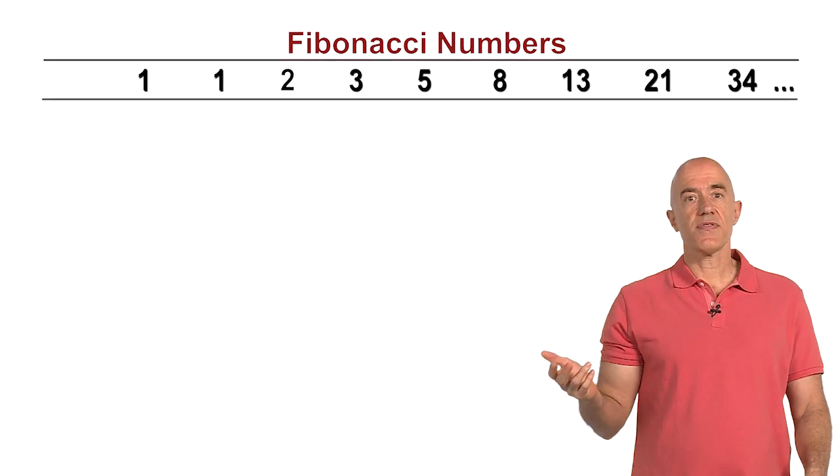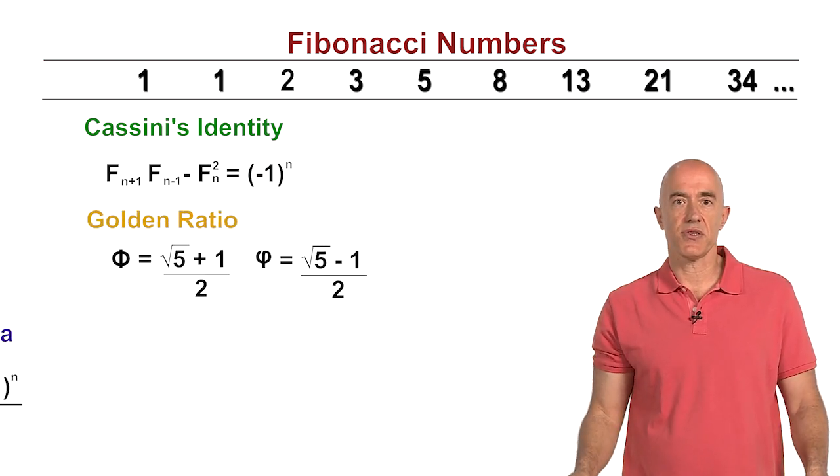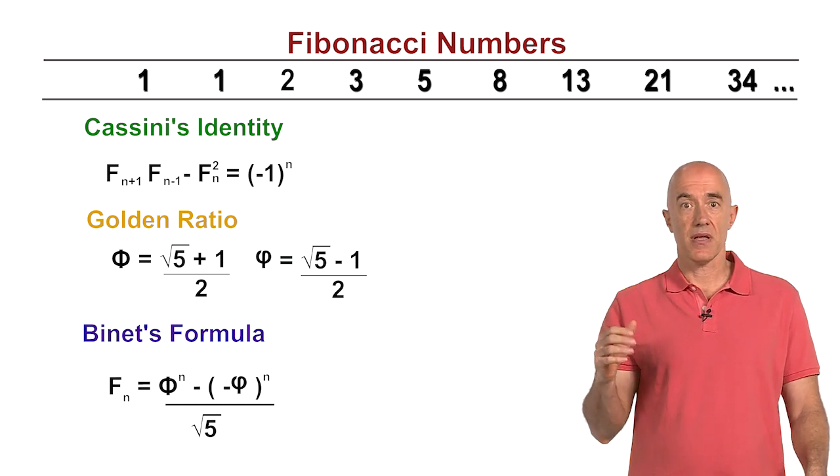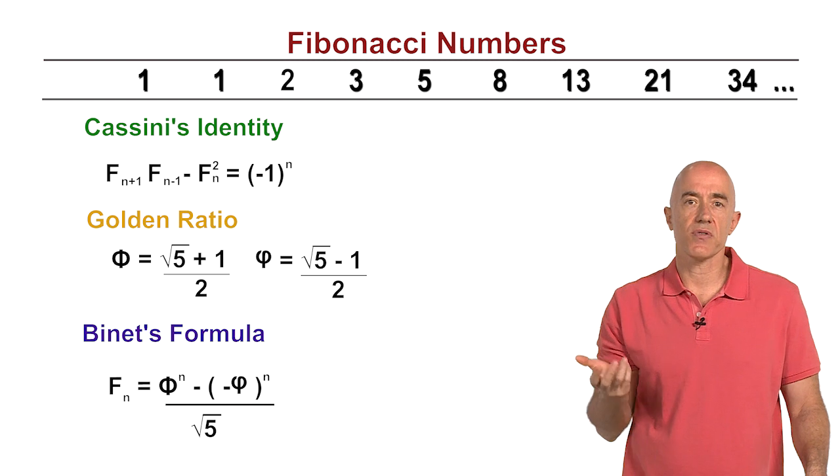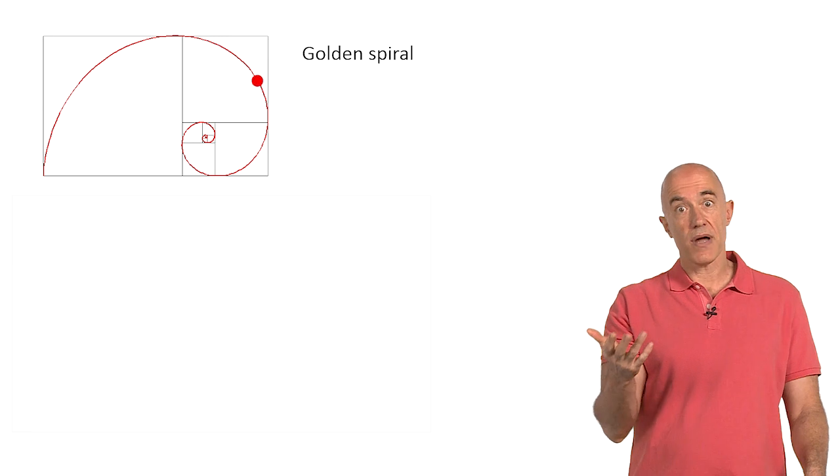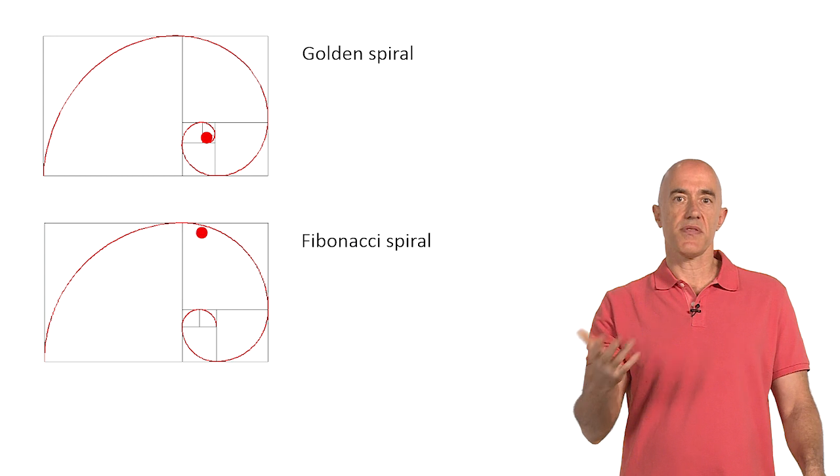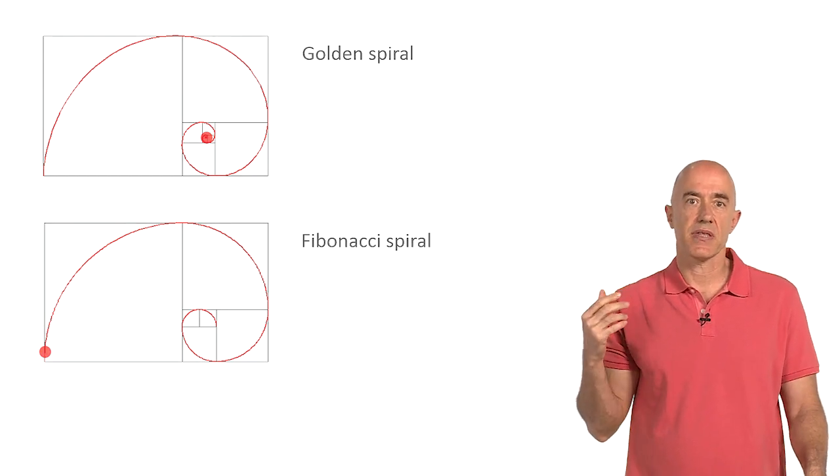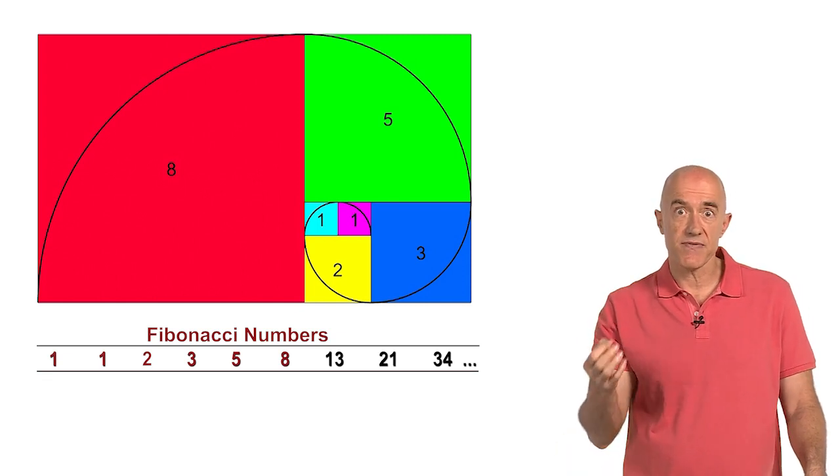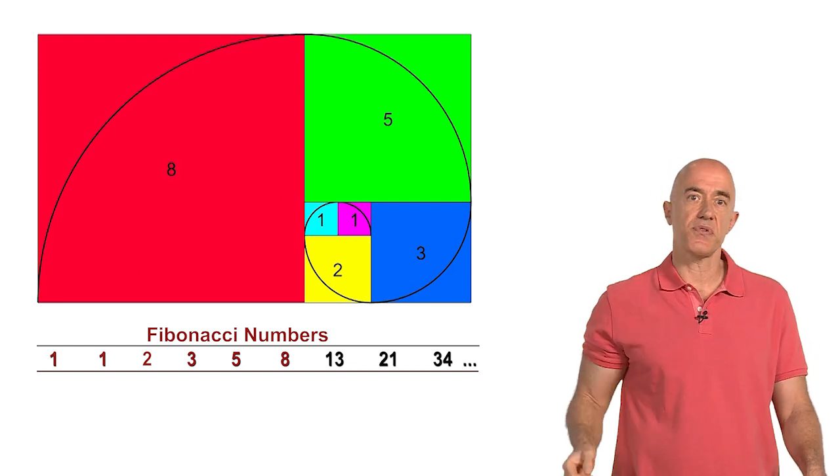We'll derive Cassini's identity in this course. And we'll also discuss other interesting mathematical relationships that connect the Fibonacci numbers and the golden ratio. I'll also show you how to construct what I think are two of the most beautiful pictures in mathematics. One that leads to a spiral called the golden spiral, and one that leads to another spiral called the Fibonacci spiral. I used the Fibonacci spiral with the first six Fibonacci numbers as the icon for this course. Look at this beautiful picture.